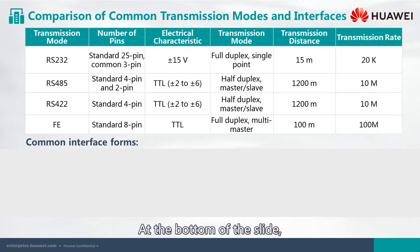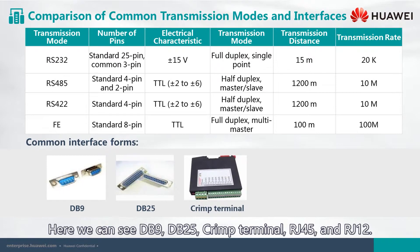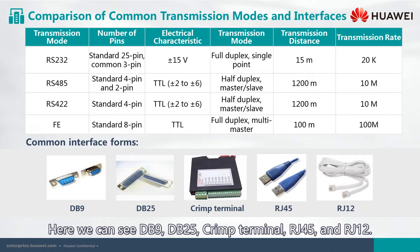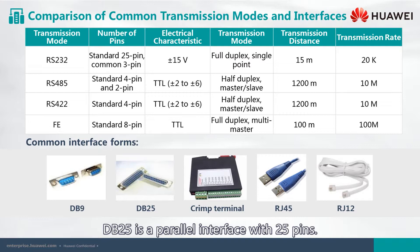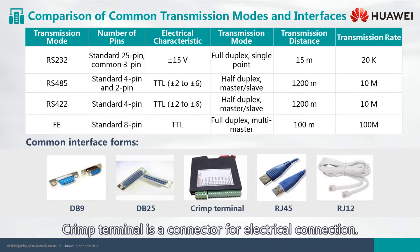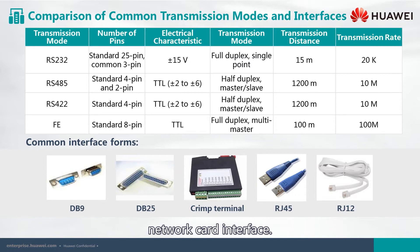At the bottom of the slide, we see some different interfaces: DB9, DB25, crimp terminal, RJ45, and RJ12. DB9 is a serial port with 9 pins. DB25 is a parallel interface with 25 pins, and different pins have different meanings. Crimp terminal is a connector for electrical connection. The RJ45 interface is usually used for data transmission, with the most common application being the network card interface. RJ12 is mainly used for telephone lines.